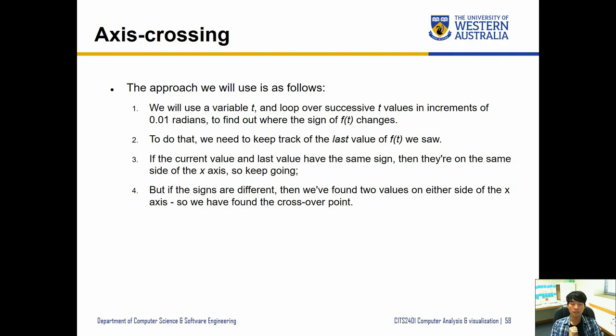The approach is straightforward. Four steps. First, create a variable t that loops over successive t values in increment of 0.01 radians and calculates the value of ft. Theta is our input, using variable t. We need to keep track of the last value of ft we saw, storing these in a list or array. If the current value and last value have the same sign, we haven't gone over the axis line. But if the signs are different, the line has crossed over the x-axis. We have found two values on either side, the crossover point, which is an approximate.